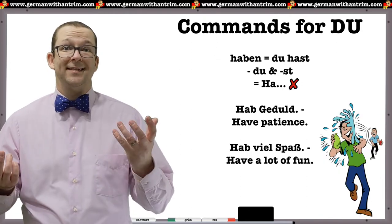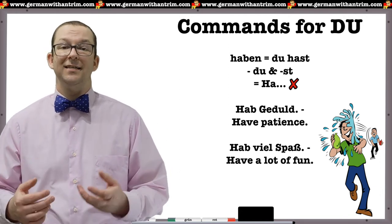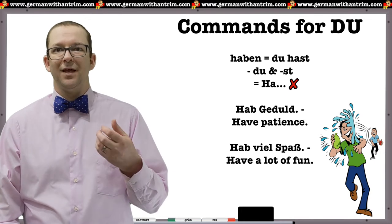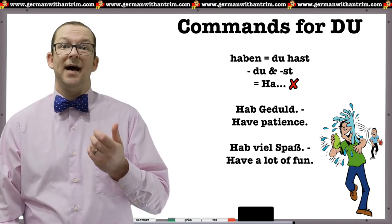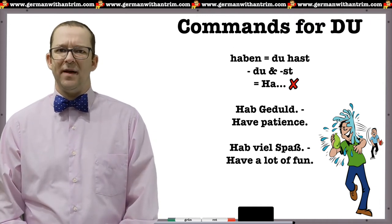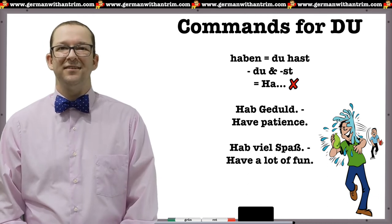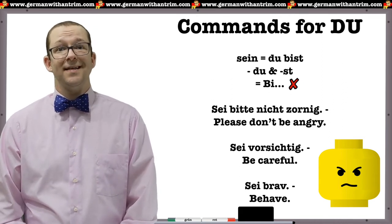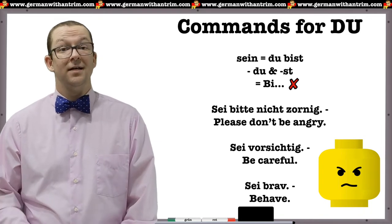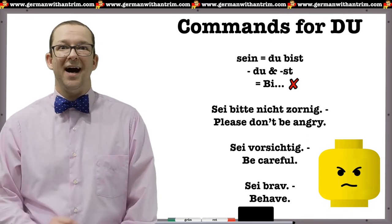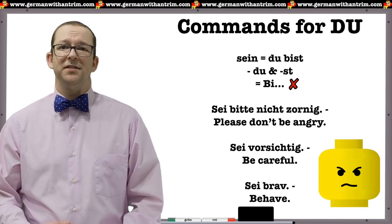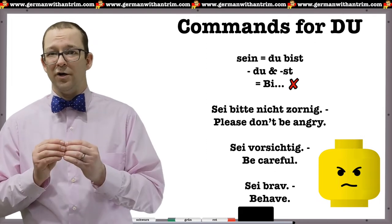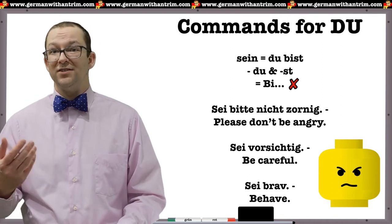As usual, haben and sein are unusual. The normal Du form of haben is du hast; removing ST gives you ha, which is obviously wrong. The Du command for haben is hab. For example: Hab Geduld — have patience. Hab viel Spaß — have a lot of fun. For sein, we use sei as the Du form command. Sei bitte nicht zornig — please don't be angry. Sei vorsichtig — be careful. Sei brav — behave. I like that last example because 'behave' in English acts like 'be' with an adverb but is one word, whereas in German it actually is two words — sei brav.